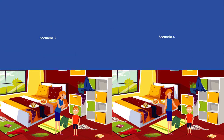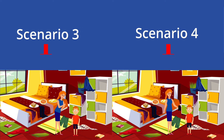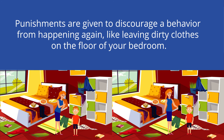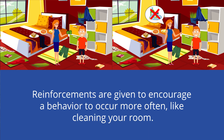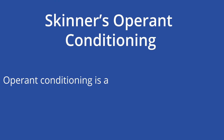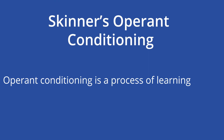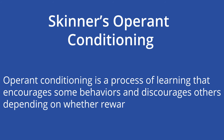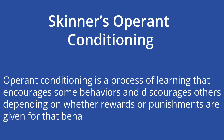You might have noticed that your mom's goal in these last two scenarios is slightly different from her goal in the first two. Punishments are given to discourage a behavior from happening again — like leaving dirty clothes on the floor — while reinforcements are given to encourage a behavior to occur more often — like cleaning your room. Operant conditioning is a process of learning that encourages some behaviors and discourages others depending on whether rewards or punishments are given for that behavior.